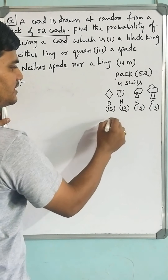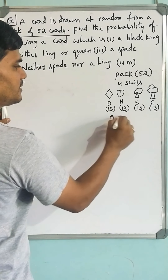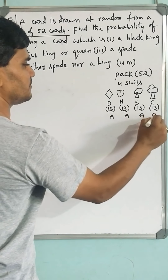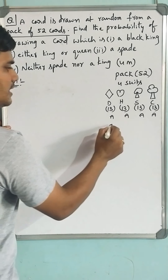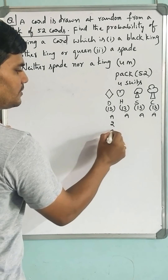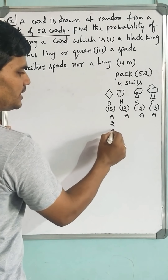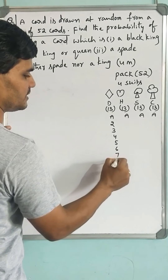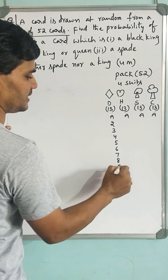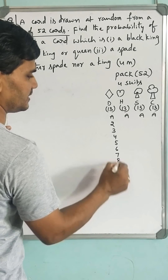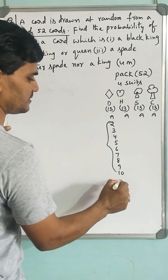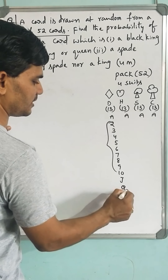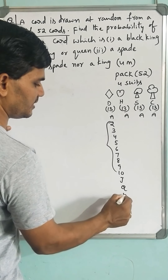Among the 13 cards, each suit starts with an ace, and from 2 to 10, that is 2, 3, 4, 5, 6, 7, 8, 9, 10 — that is 9 number cards. And after that, there will be a jack, queen, and king.